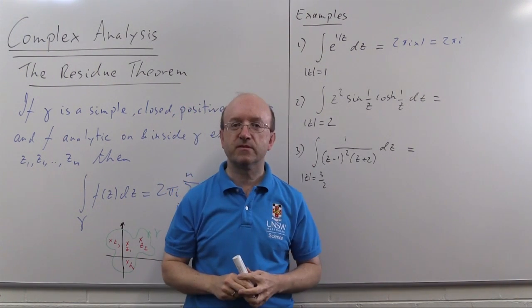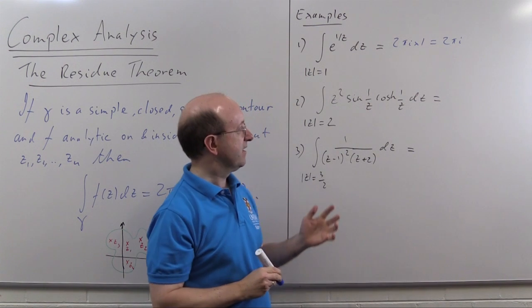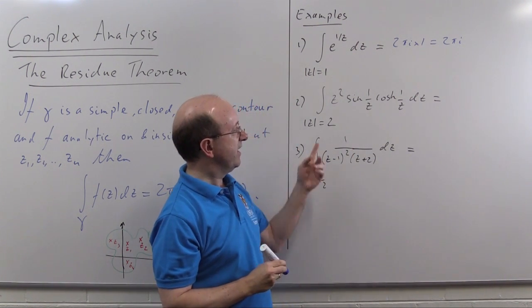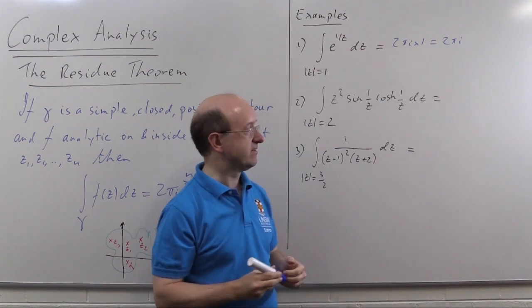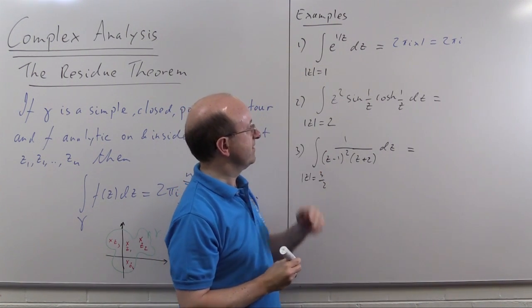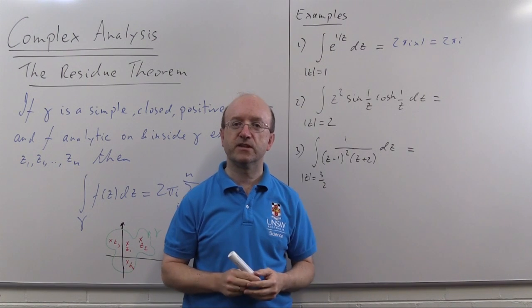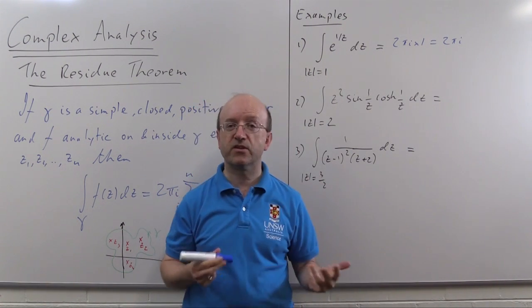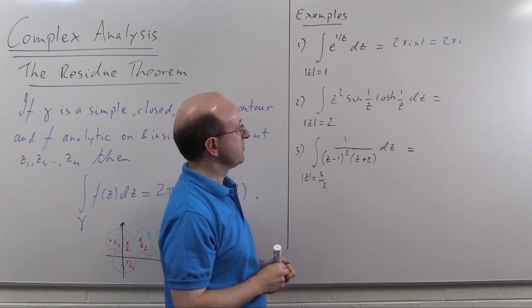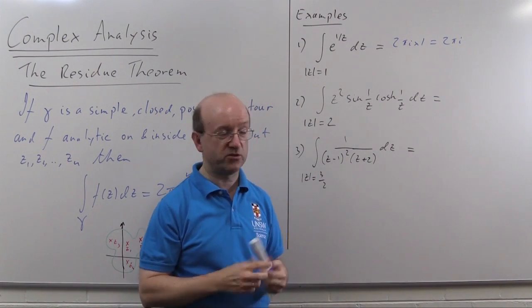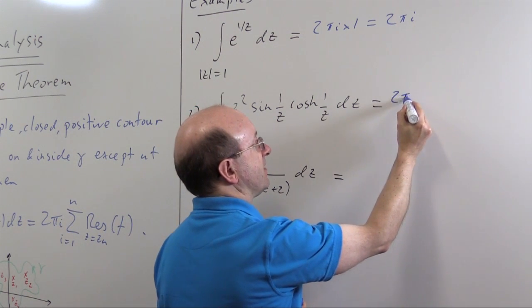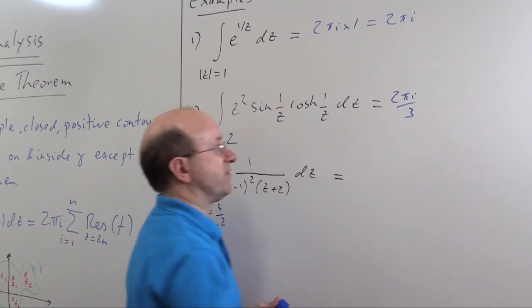In the second example once again we've got an essential singularity at z = 0 and that's the only singularity involved here and we calculated the residue of this function at z = 0 in the same video and we got a third. So the integral here must be 2πi times that residue a third so that must simply be 2πi/3.